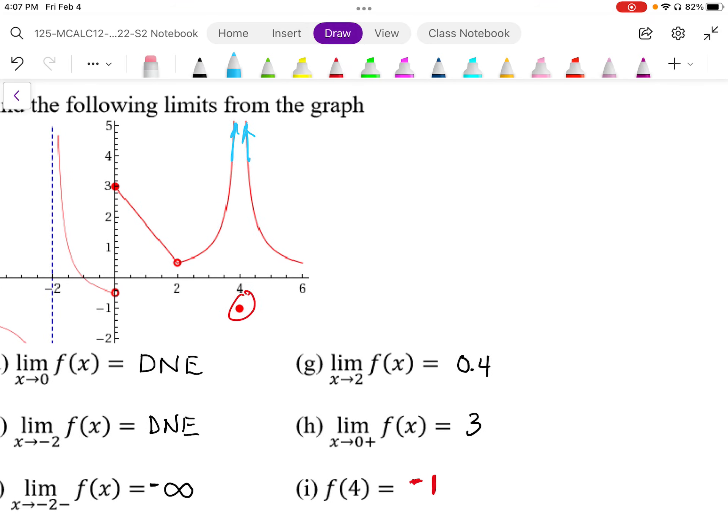So in this case, if I were to say the limit as x approaches 4 of f of x, well that from both sides is approaching positive infinity, so the limit would be positive infinity. But the actual value is something totally different and these two things are not necessarily related to each other.